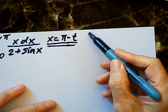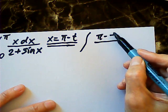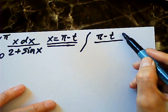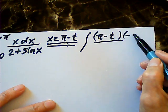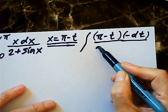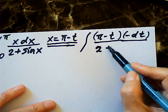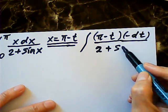So my integral becomes pi minus t and dx will be negative dt. This is 2. This is sine pi minus t is sine t.